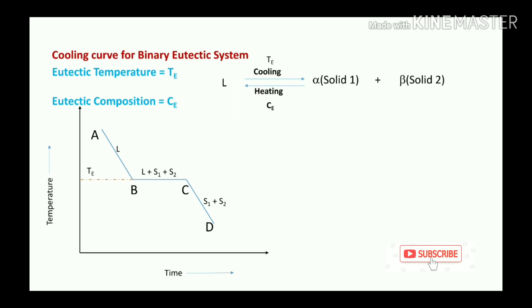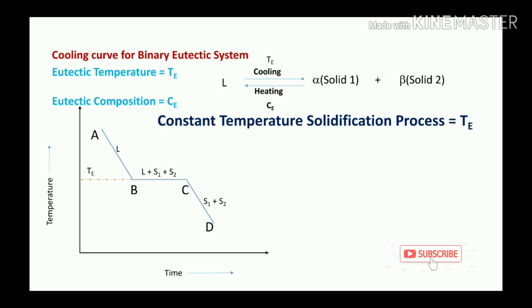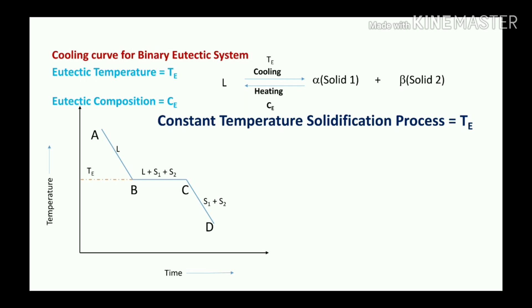By heating at eutectic composition, the solids convert back into liquid phase. In simple terms, the binary eutectic system involves a constant-temperature solidification process at the eutectic temperature, where the liquid phase converts into two different solids.